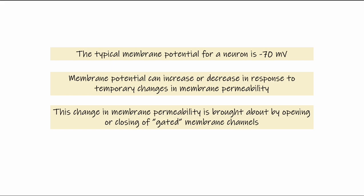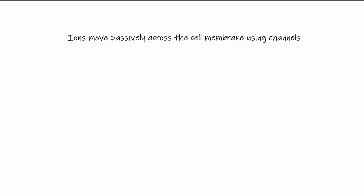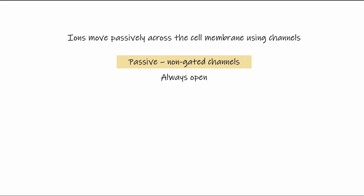These changes in membrane permeability are brought about by the opening or closing of gated membrane channels. The first type are passive channels — non-gated channels that are always open. Some of the more common non-gated channels are potassium leak channels, which confer an increased permeability of the membrane to potassium and play a role in our resting membrane potential.